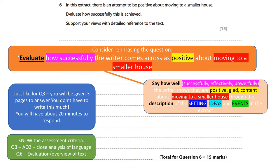Just like we did last time we looked at question six together, one of the ways to help you access this question is to actually reword the way the question is phrased. I would rewrite this question as: evaluate how successfully the writer comes across as positive about moving to a smaller house. In the peach colour box, I've broken that down even further so you can be absolutely clear about what you're writing about.